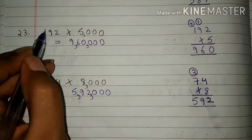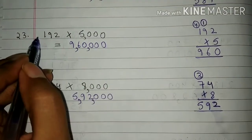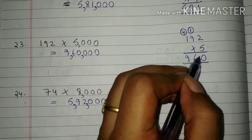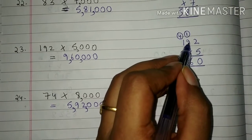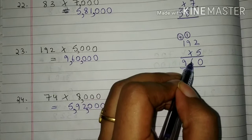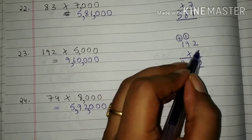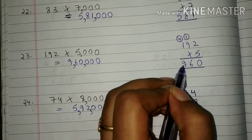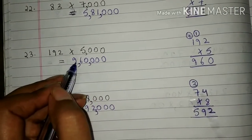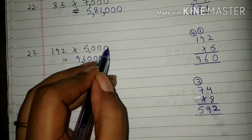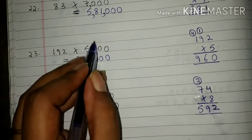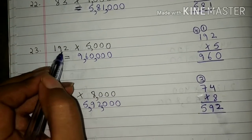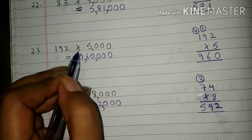23rd question: 192 into 5000. Students, first we will multiply 192 by 5. So 5 into 2 is 10. 0 we have written here and 1 will be carried. 5 into 9 is 45 plus 1 is 46. 6 we have written here and 4 will be carried. 5 into 1 is 5 plus 4 is 9. Students, 192 multiplied by 5 will give 960. So students, we will write 960 here, and here 0 is written 3 times, that is 0 0 0. So we will write 0 three times here also. Now students, 192 multiplied by 5000 will give 960,000.